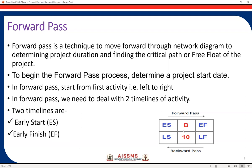Here B is the activity name, or we write the full description about the activity here. This 10 is the duration of the activity — how much time the activity is going to take to completion. There are four more fields: the first one is ES and the second one is EF. In the first row, these two fields we are going to complete in the forward pass.